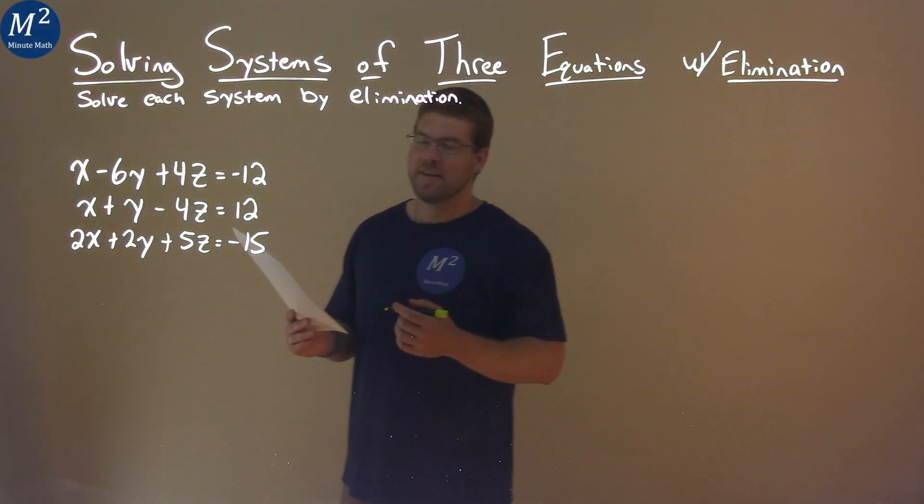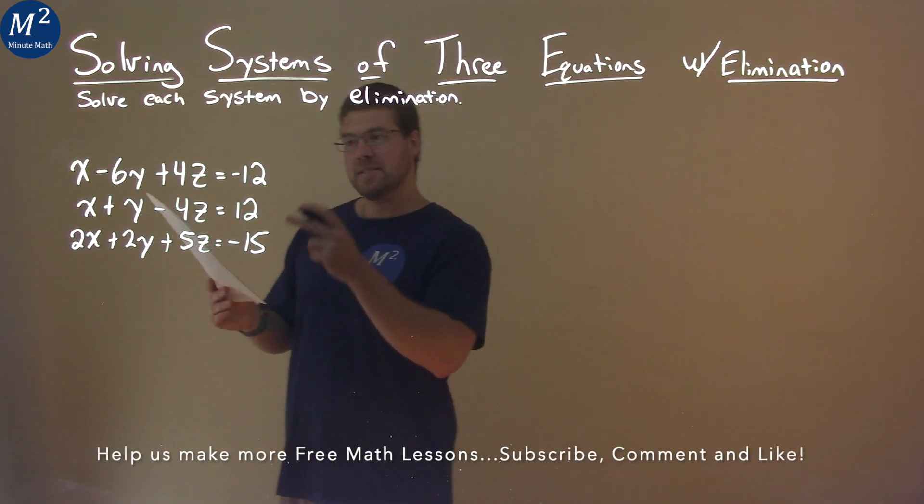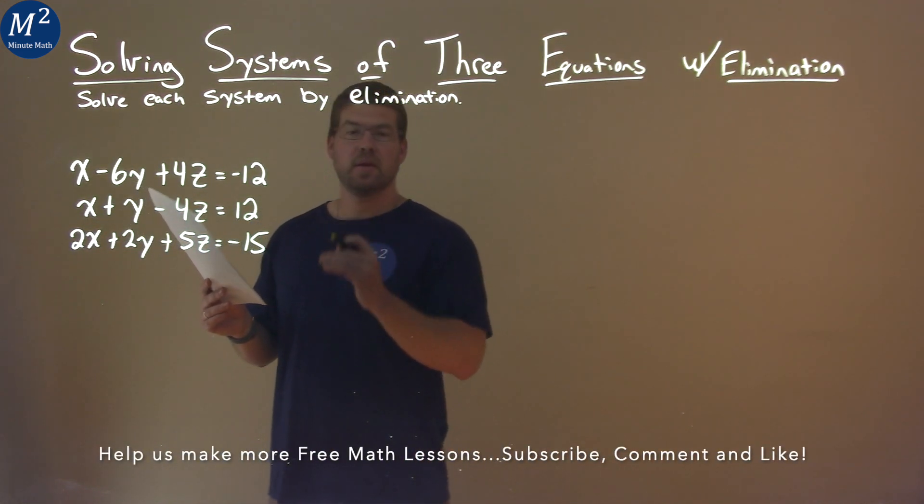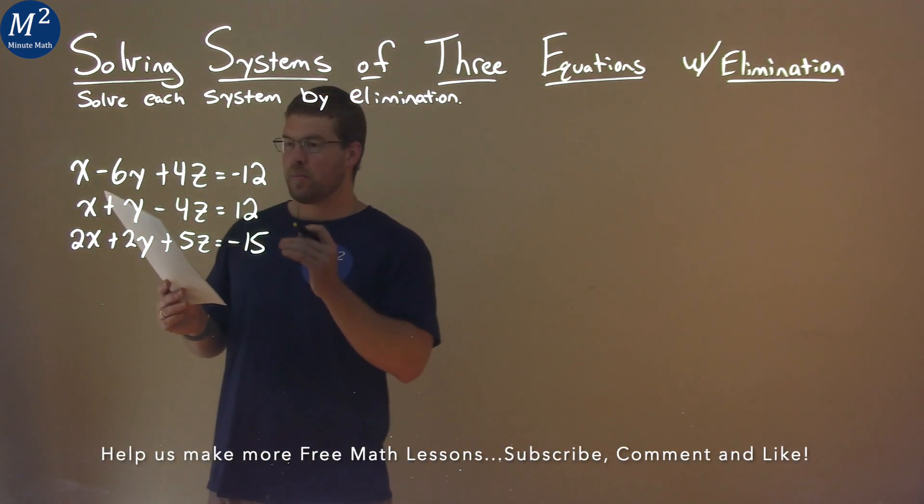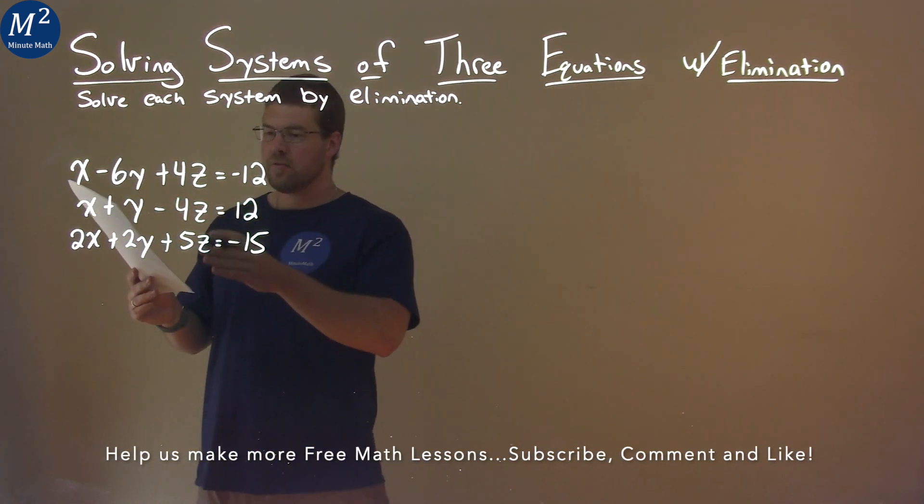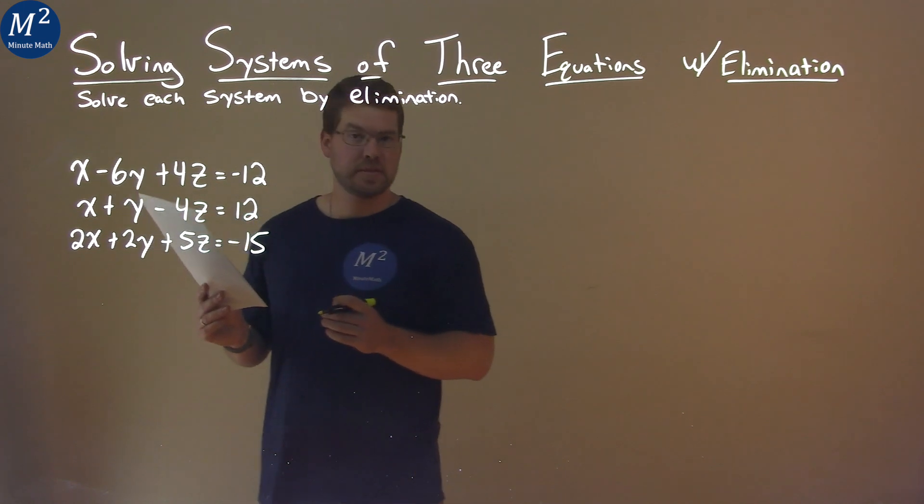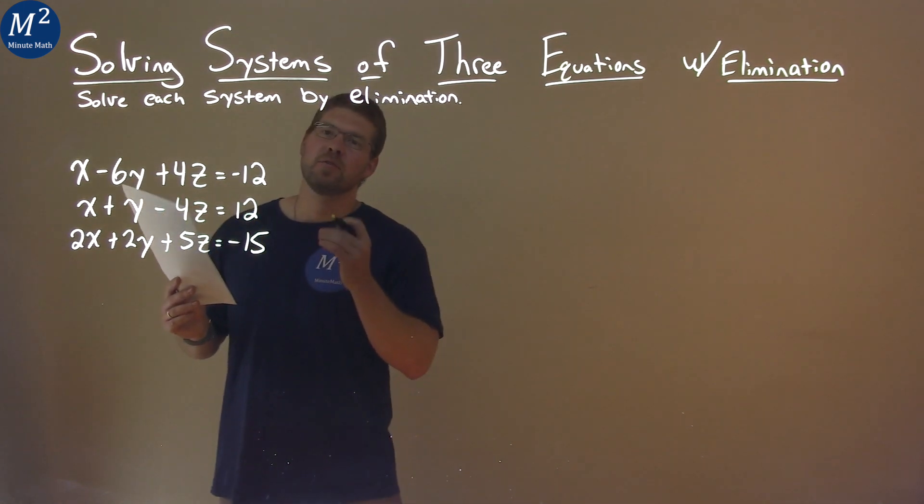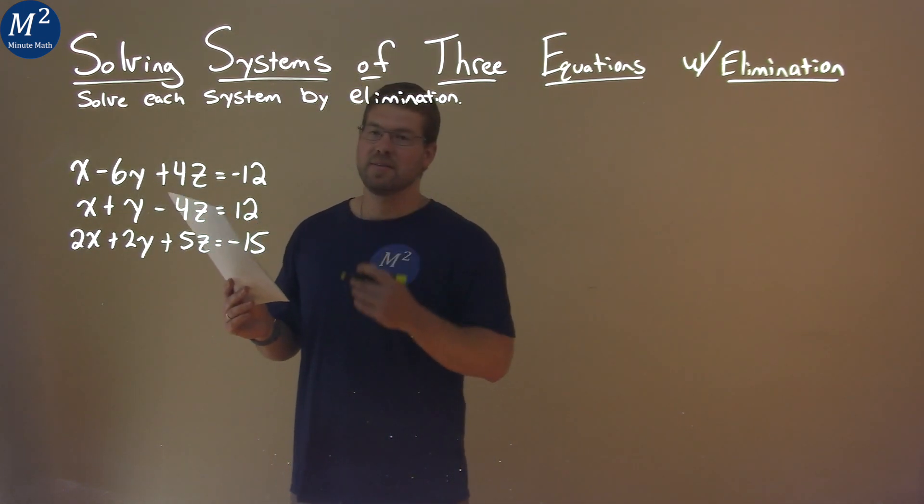We're given this problem right here: x minus 6y plus 4z equals negative 12, x plus y minus 4z equals 12, and 2x plus 2y plus 5z equals negative 15. We need to solve this system by elimination.